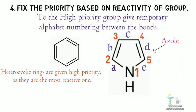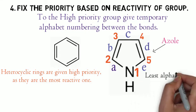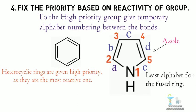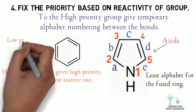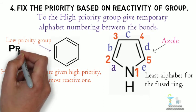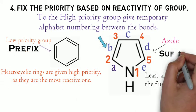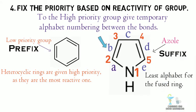While numbering, give numbers in the form such that we get the least alphabet for the fused ring. Now, write the low priority group as prefix, followed by the symbol of fused alphabet, and write the high priority group as suffix.